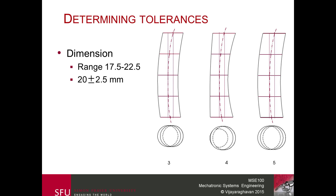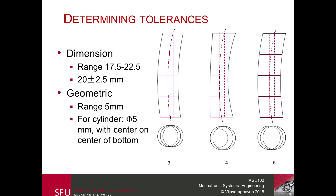Looking at the dimensional range across all parts, since everything is the same, the range is basically 17.5 to 22.5 millimeters. We can represent this as 20 plus or minus 2.5, which would be the dimensional tolerance you'd put for that particular hole, or what the designer may have intended.